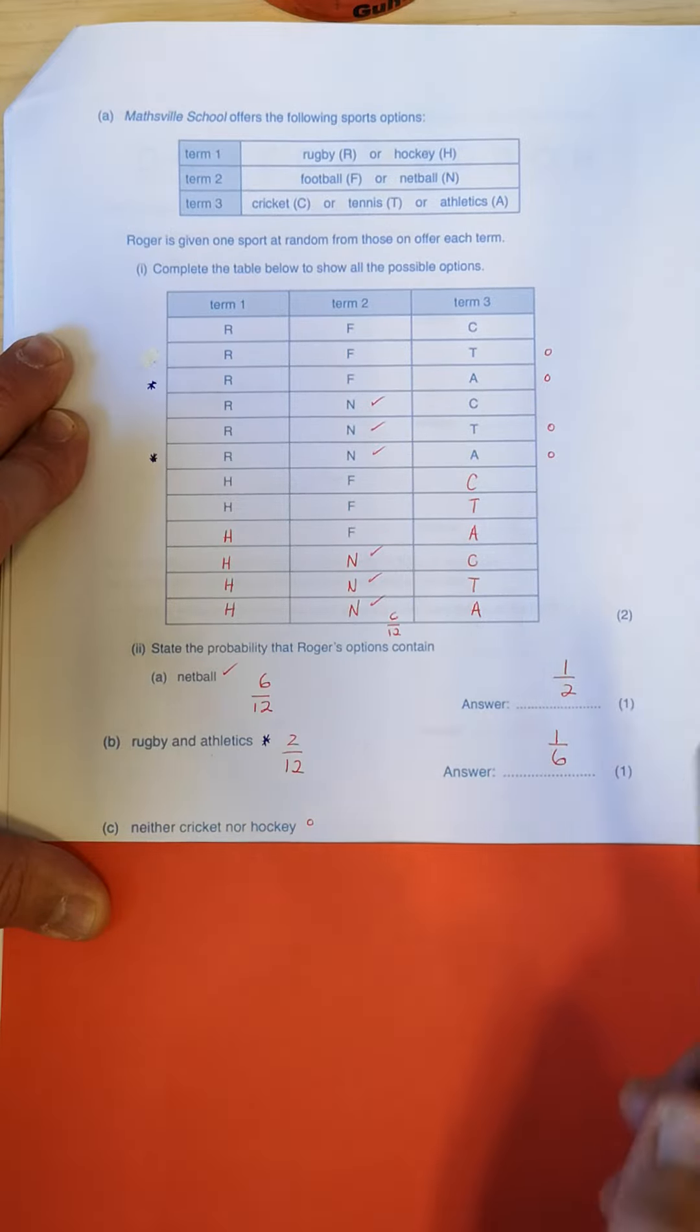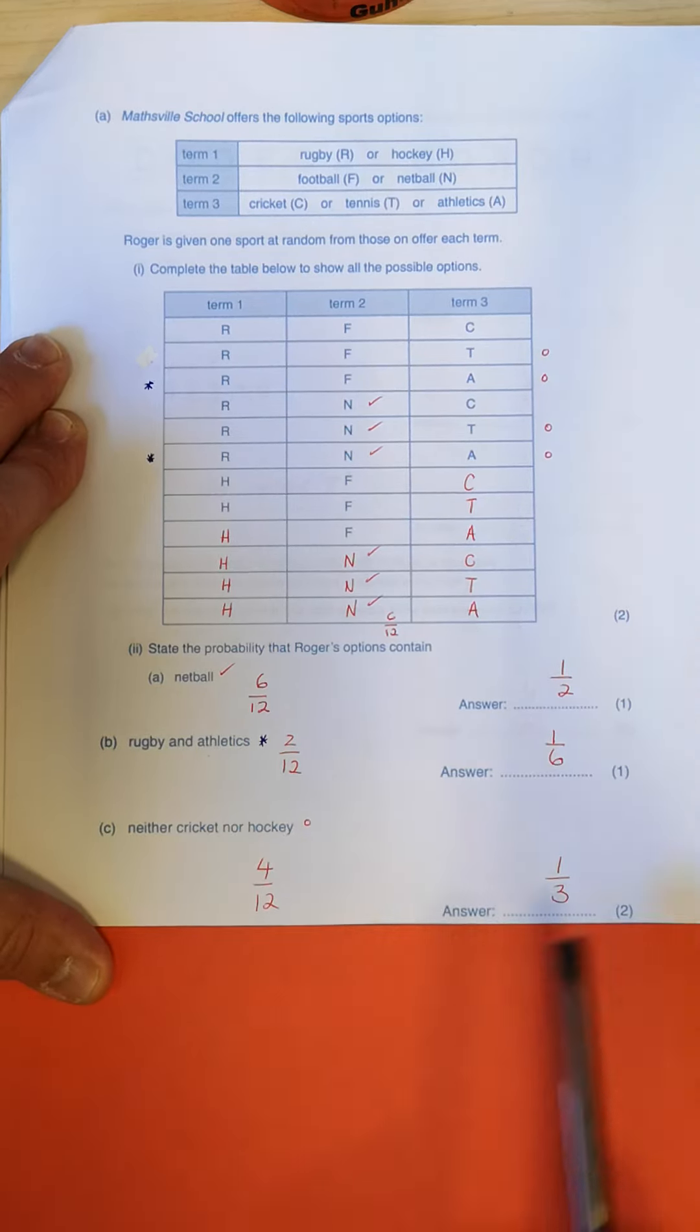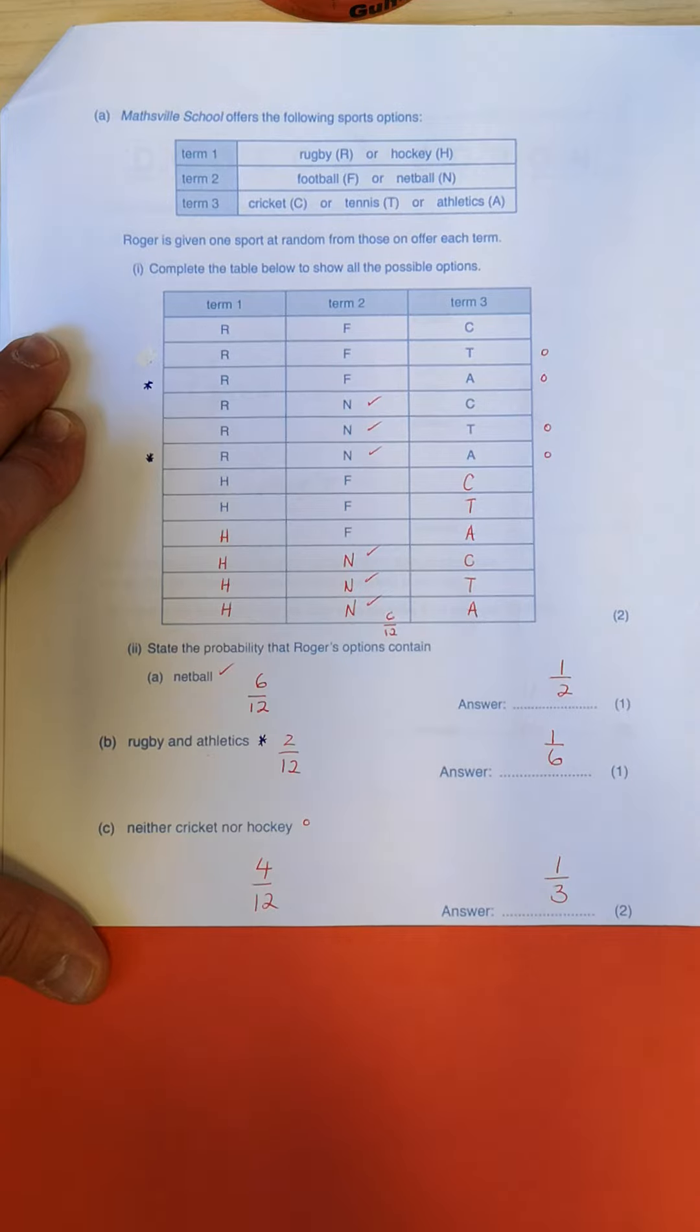Okay, so in this case it was four out of the twelve. And when I simplify four over twelve, it is a third.